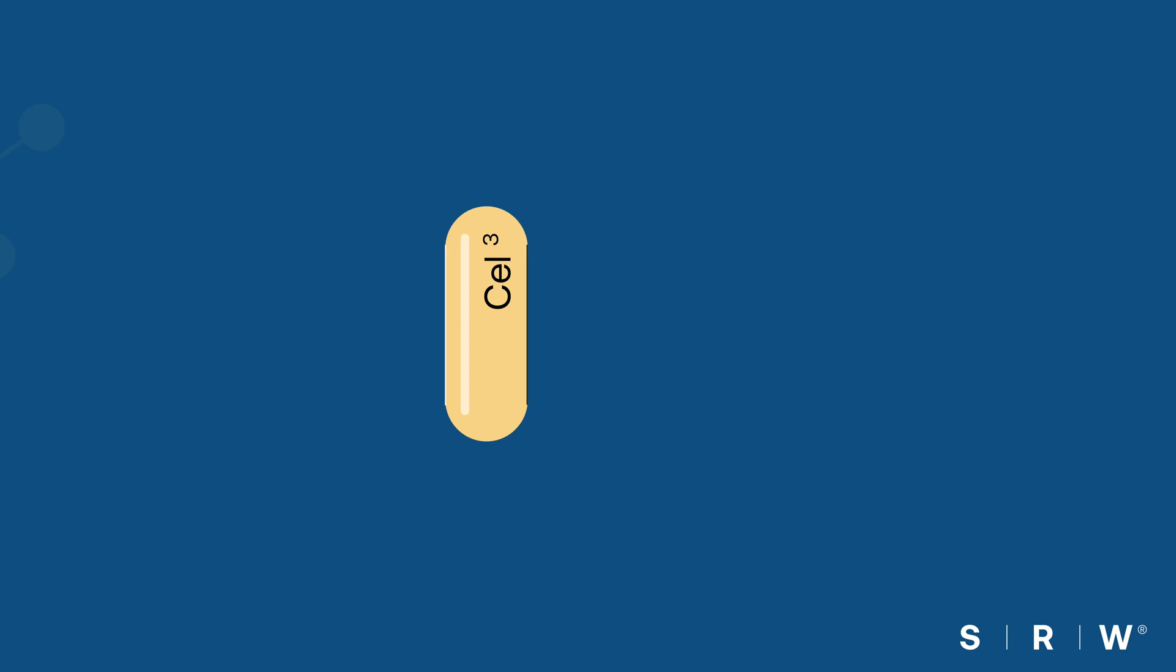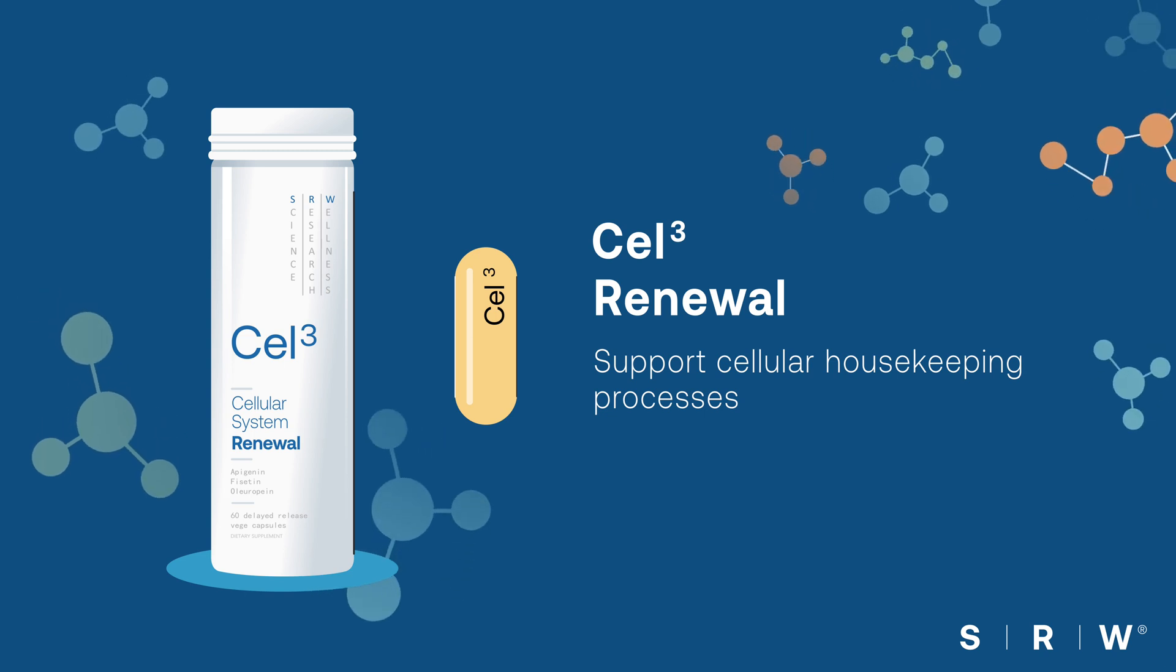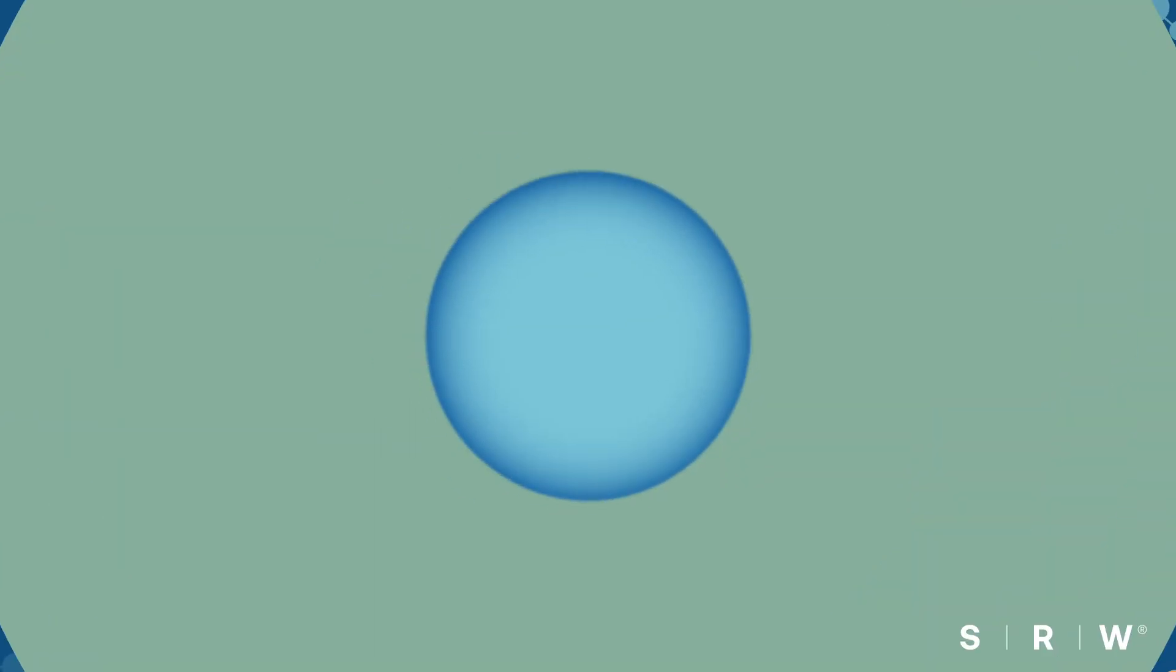Cell 3 Renewal supports the clearing of expired cells, the folding and formulation of functional proteins, and your ability to sense and respond to nutrients. Expired cells, or zombie cells, are cells that are no longer useful.